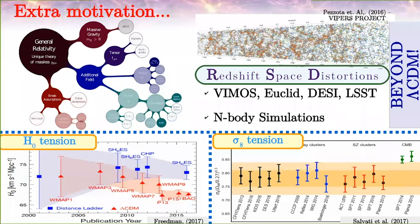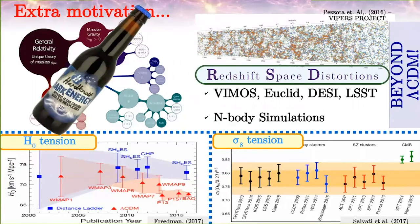Redshift space distortions can be used to distinguish between modified gravity models and to determine whether our model of the universe can be understood with a dark energy substance. For redshift space distortions, we also need to discuss the current status of observations and N-body simulations, which help us understand the models.